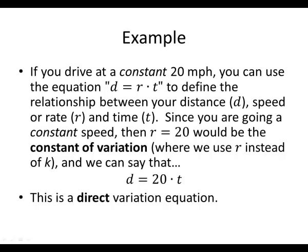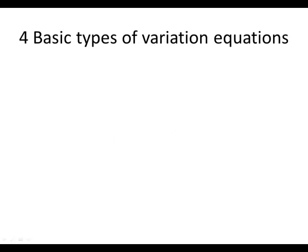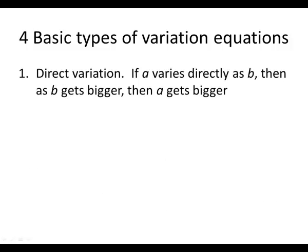So let's look at the different kinds of variation. There are four basic types of variation equations. The first one we just looked at in our example, and that's direct variation, which says if a varies directly as b, then as b gets bigger, a gets bigger. And notice that our constant k gets multiplied by b.